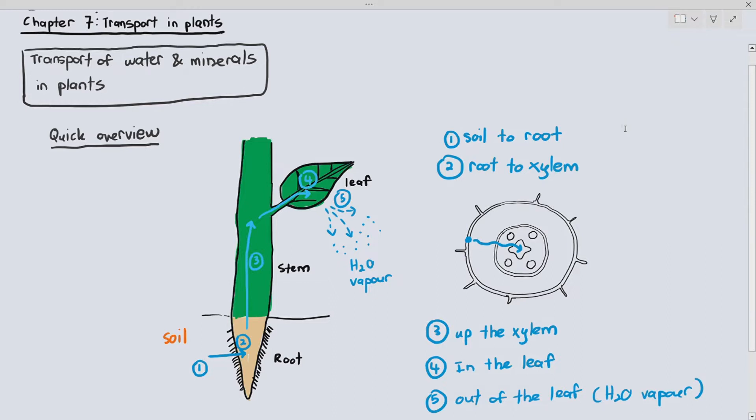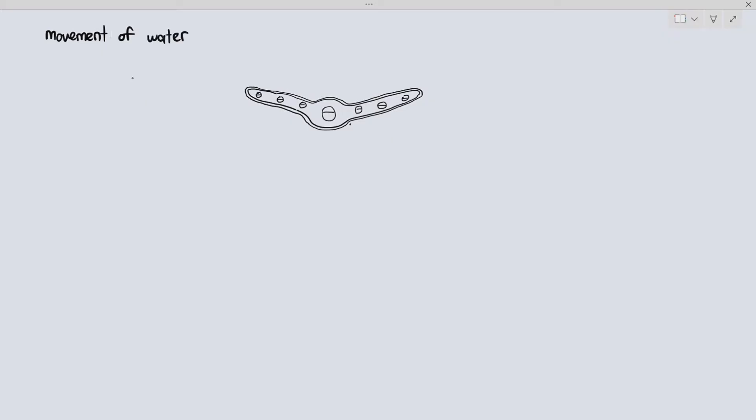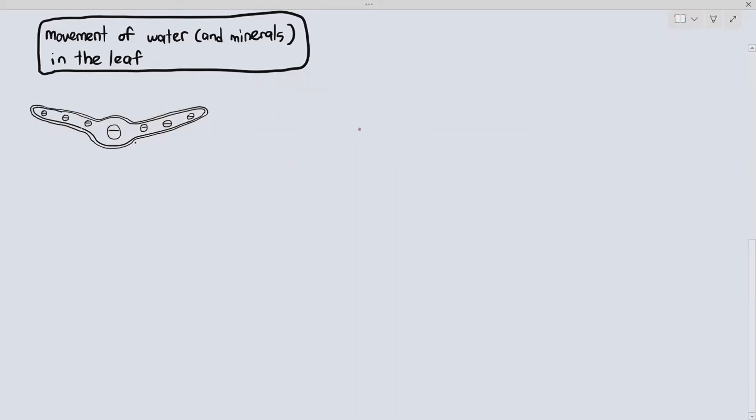Without wasting any time, we want to see how the water and minerals move in the leaf, and how water in particular will diffuse out of the leaf through transpiration. The first thing we are going to do is I'm showing you here a cross-section of a leaf, and we are going to magnify a specific part of that leaf, which I have bordered in a pink box or a pink rectangle.